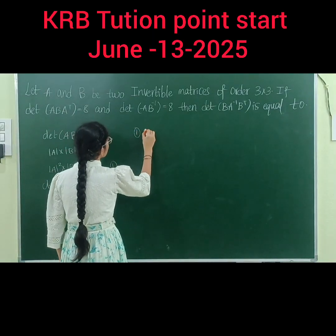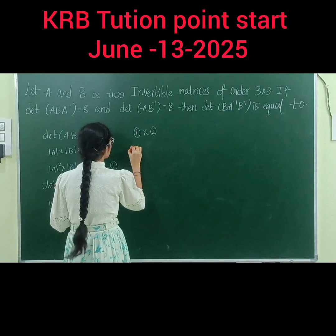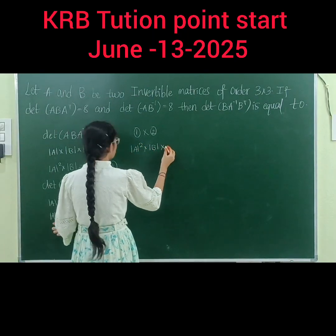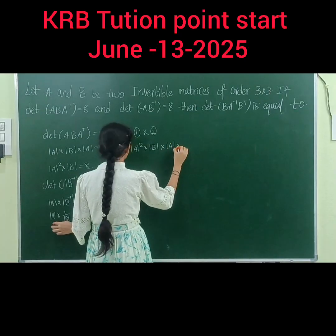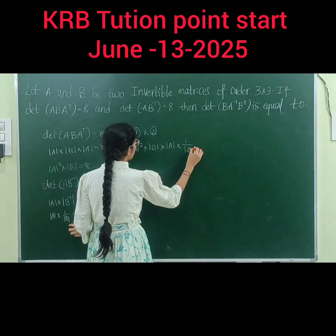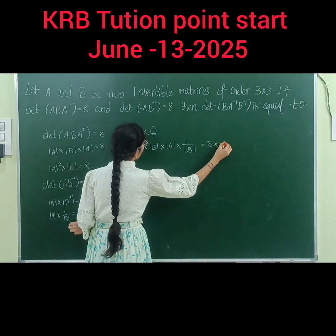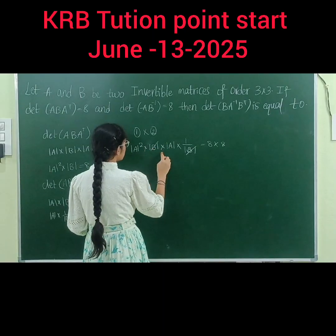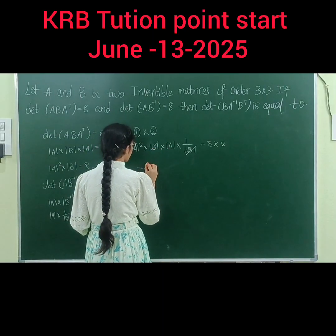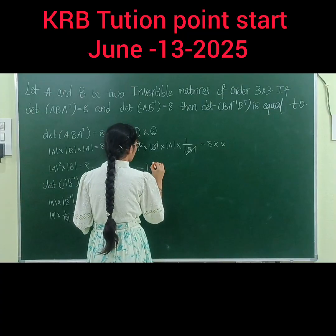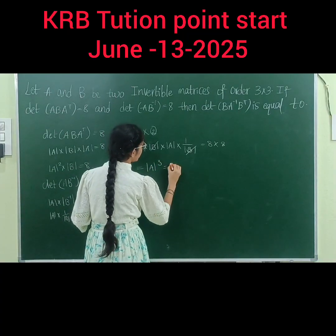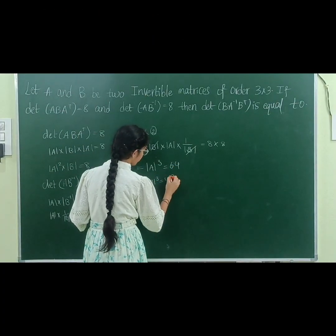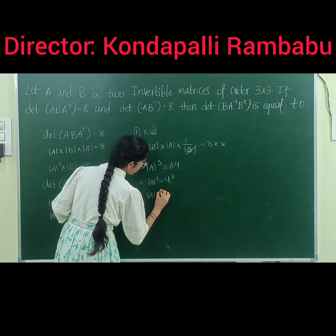Equation 1 multiplied by equation 2. Equation 1: |A|² · |B|. Equation 2: |A| · (1/|B|). This equals 8 × 8. The |B| terms cancel. |A|² · |A| = |A|³ = 8 × 8 = 64. So |A|³ = 4³, therefore |A| = 4.